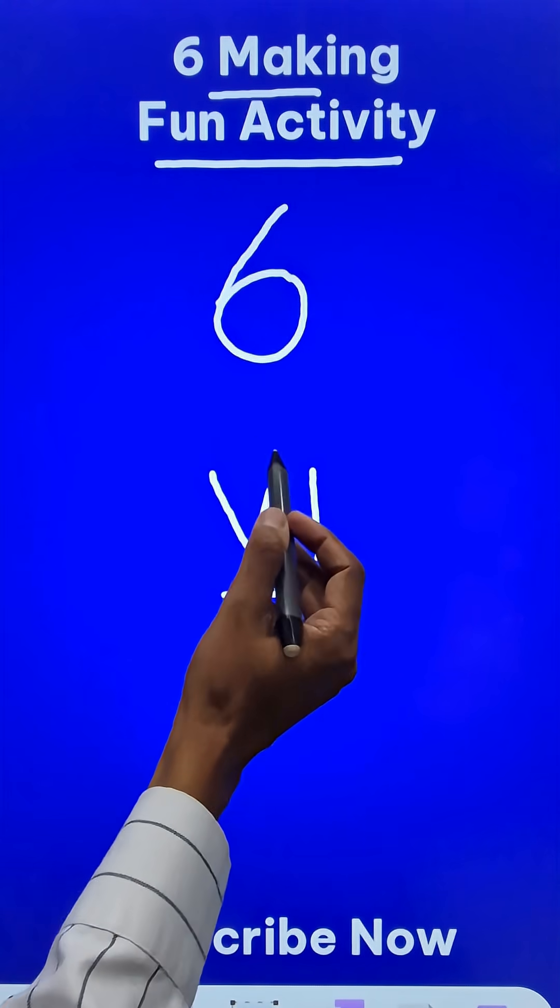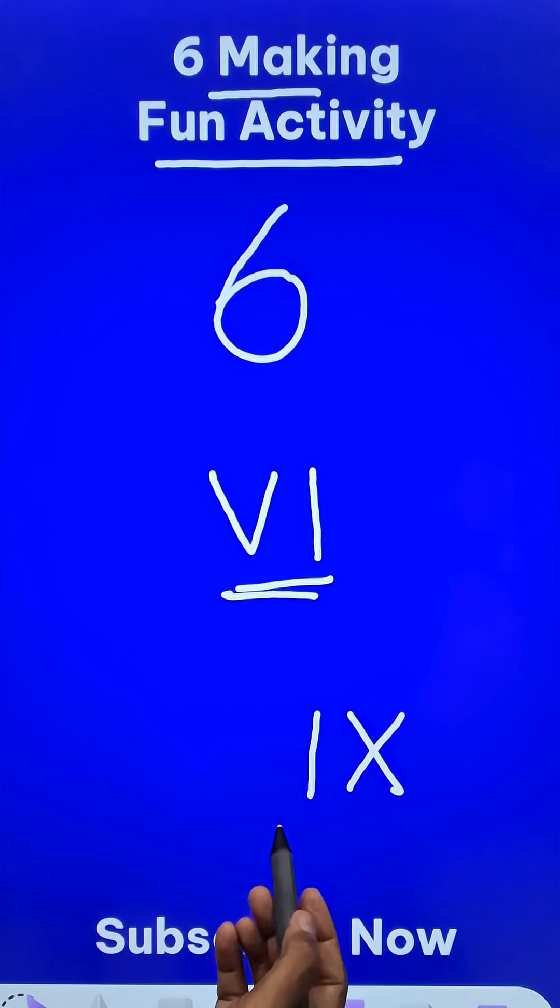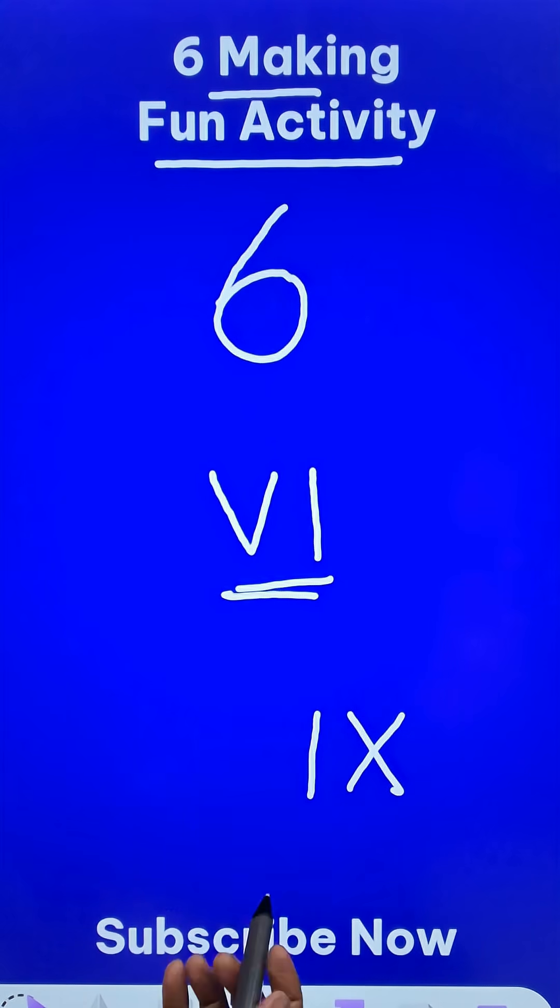Now the Roman six is in the mind. So what you do next is draw a Roman nine that is a line and a cross, that is Roman nine. Ask the friend now use the pen only once and make a six out of this.